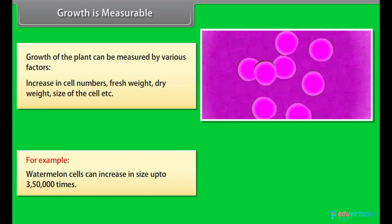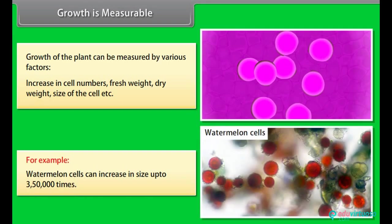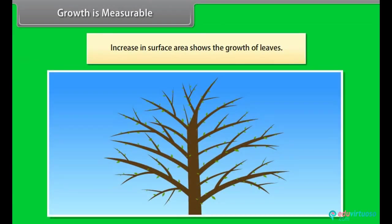For example, watermelon cells can increase in size up to 3,50,000 times. Increase in surface area shows the growth of leaves.